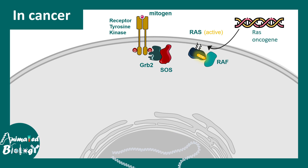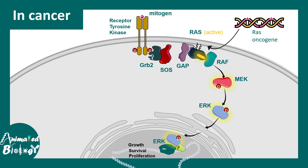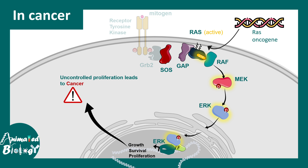In constitutively active RAS mutations, the RAS oncogene is always active — even without a signal, the GTP cannot be hydrolyzed because GTPase activating proteins are unable to function. This means the downstream pathway is always active regardless of whether the upstream mitogen or growth factor is present. The result is a dysregulated pathway leading to overgrowth, over-proliferation, and ultimately cancer.